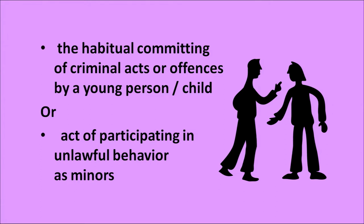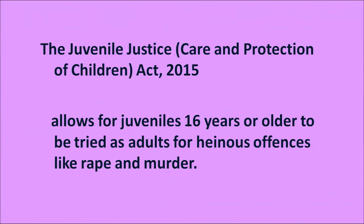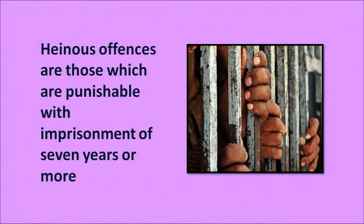The word minor is also used here. In 2015, there was a change in the law. Under the Care and Protection of Children Act 2015, juvenile justice allows for juveniles 16 years or older to be tried as adults for heinous offenses like murder or rape. Heinous offenses are those punishable with imprisonment of seven years or more.